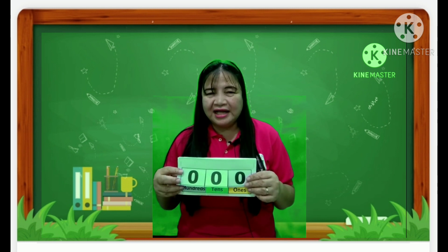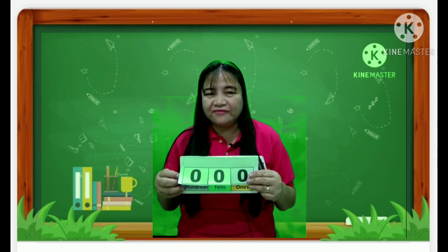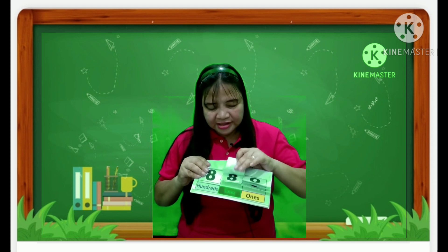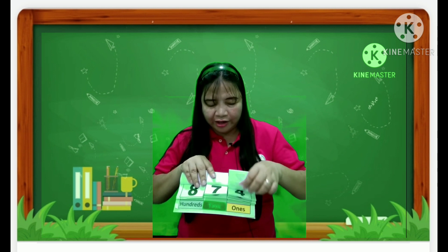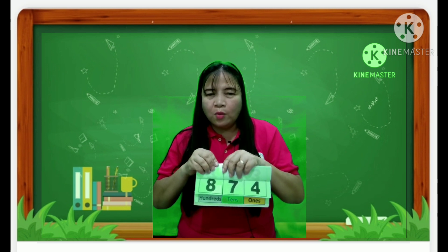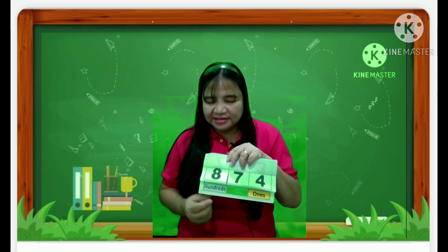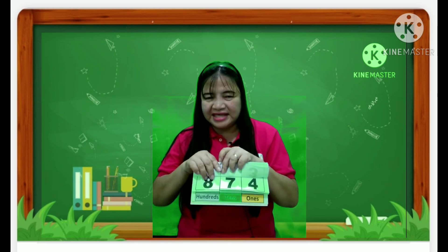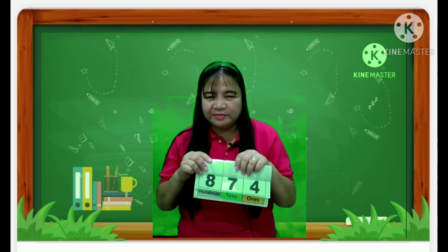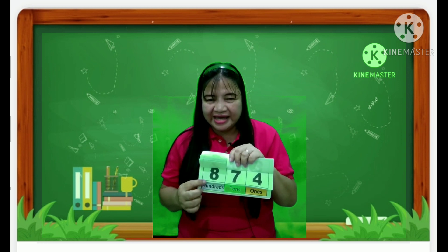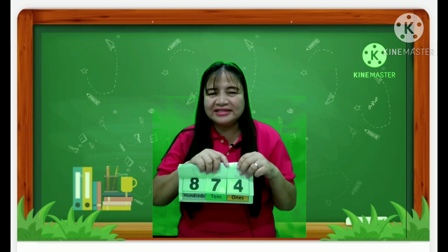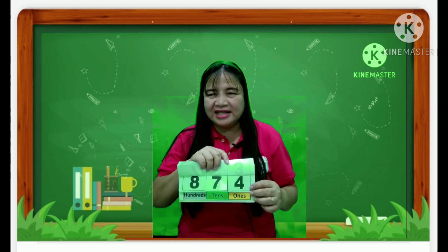Let's have another number — eight hundred seventy-four. So we have 874. What number is in the tens place? Yes, it's 7. What about the number in the hundreds place? We have 8 — very good. How about in the ones place? Good job — it's number 4.